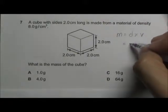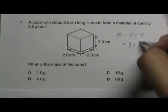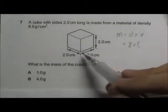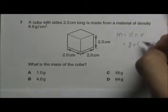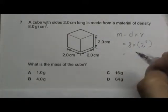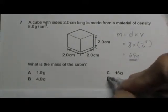The density here is 8 and the volume can be calculated using length times breadth times height. It will be 2 times 2 times 2, which is 2 cubed. This will give us 64 gram. Answer D.